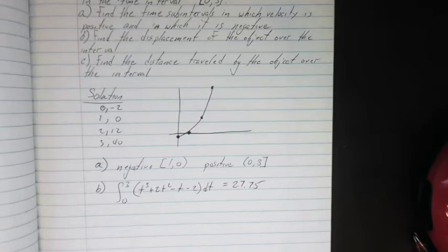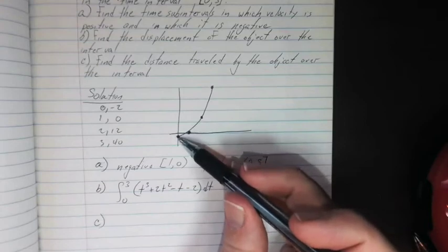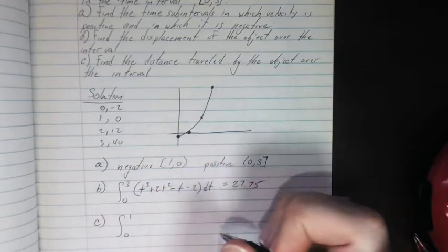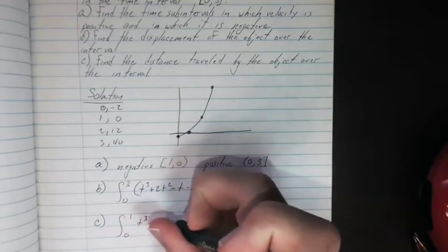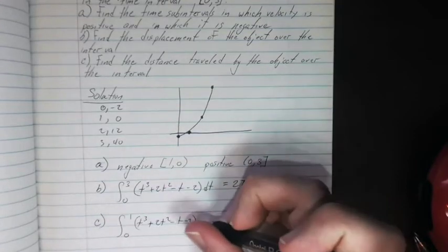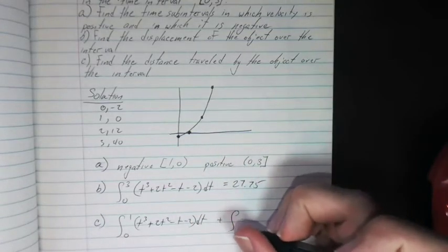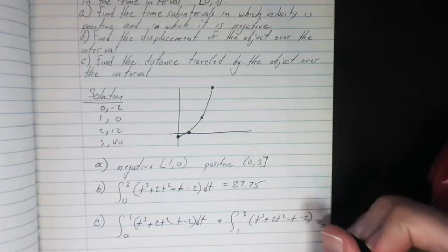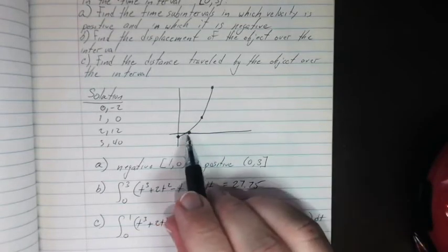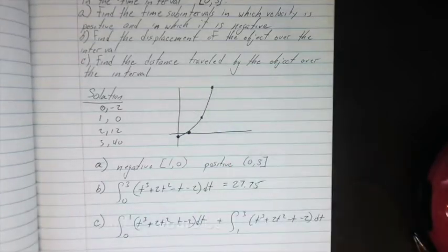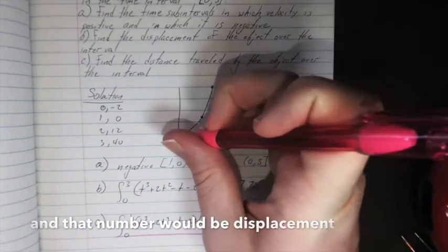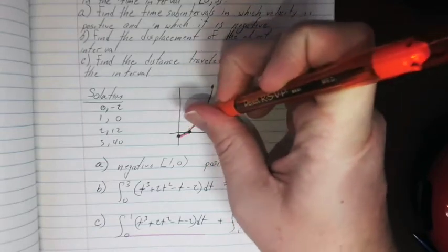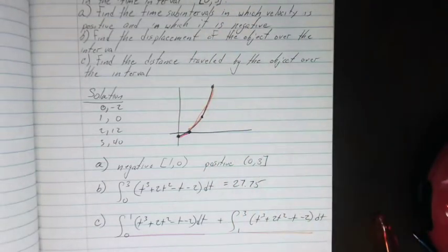Now we need to find the distance. The issue here is that the distance is given by a negative velocity here and a positive here. So we just need to break it up into two different intervals from 0 to 1 of the function plus from 1 to 3 of the same function. If we don't split it up, what's going to end up happening is some of the negative distance covered here when the velocity is negative will cancel out when the velocity is here. This part represents that velocity and this represents here.